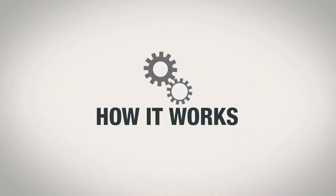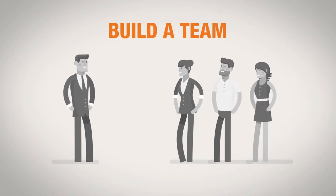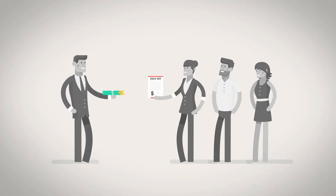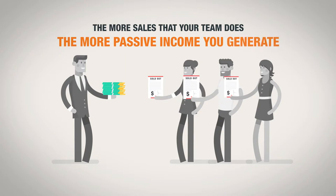This is how it works. When you are an experienced agent with PC275, you can build a team. When someone on your team makes a sale, you are given a portion of the commission. The more sales that your team does, the more passive income you generate.